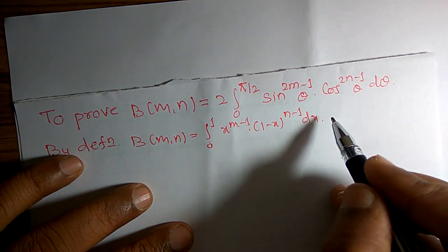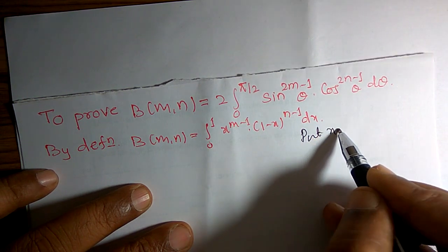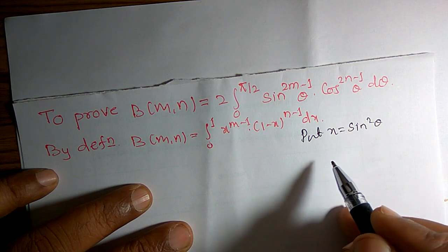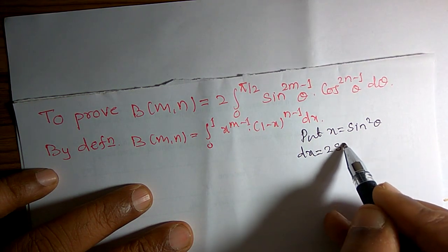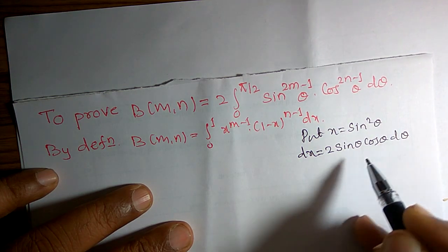Here I am going to use the method of substitution. Put x is equal to sin square theta. I will differentiate: dx is equal to 2 times sin theta into cos theta d theta.